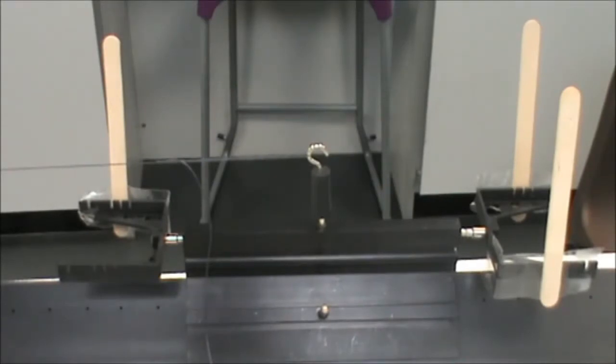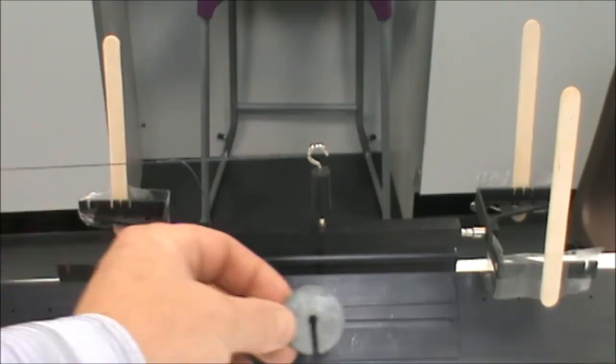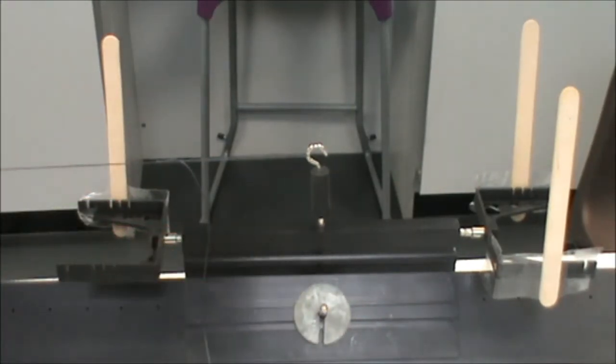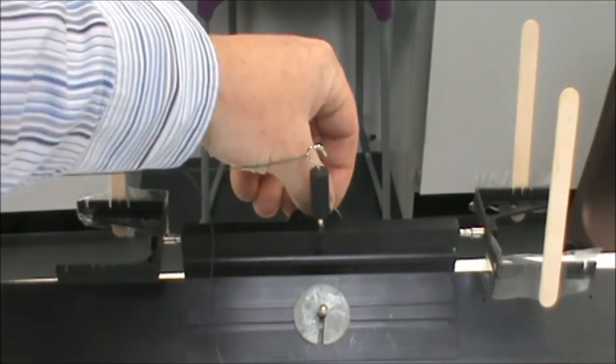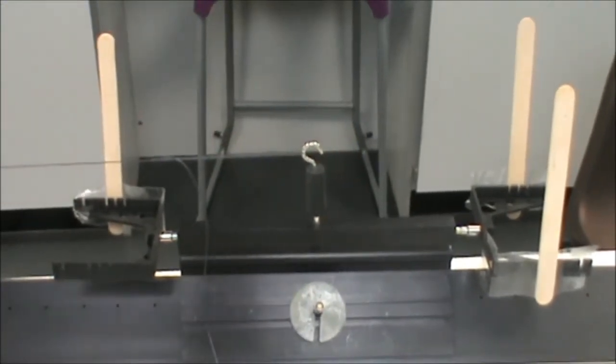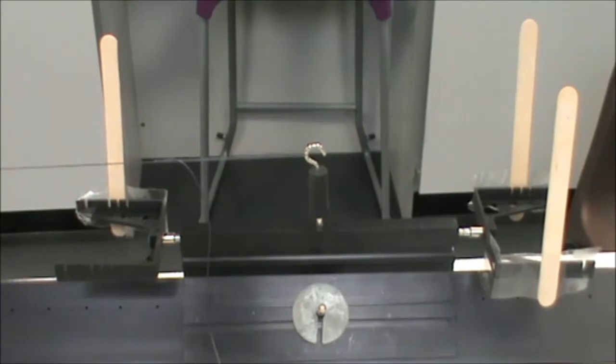We repeat the experiment but with 0.8 newtons on the mass hanger. In order to make sure that the mass of the entire system remains constant, we hang our masses that we've taken off onto our glider. Making sure that we hang them one on either side so that the glider remains balanced.